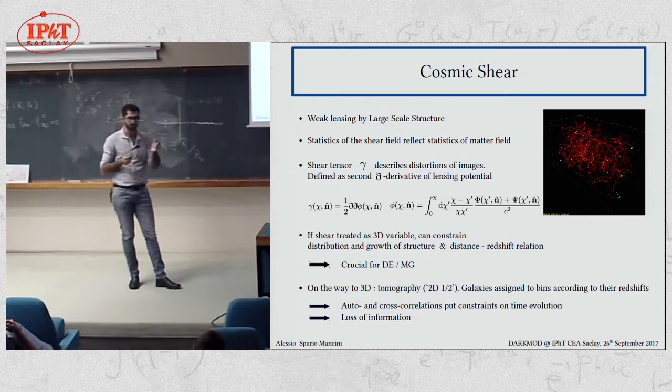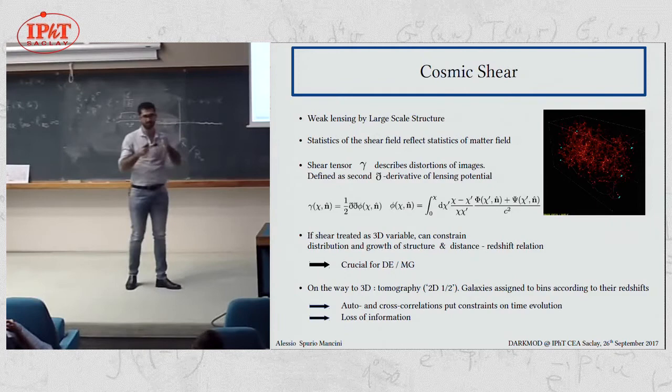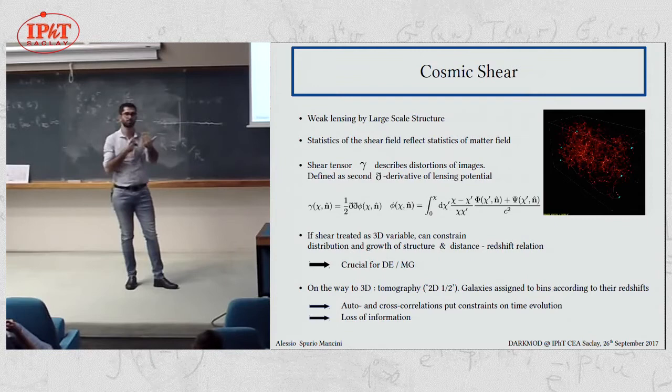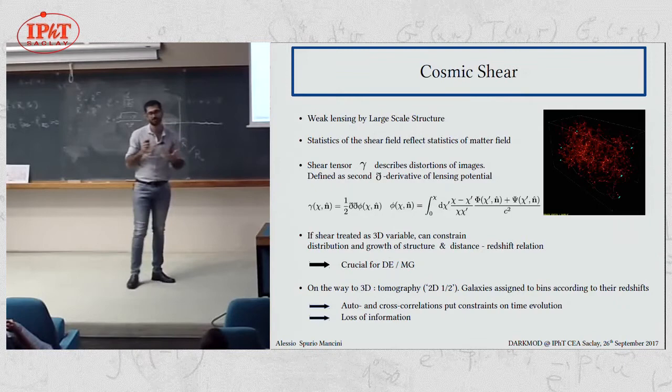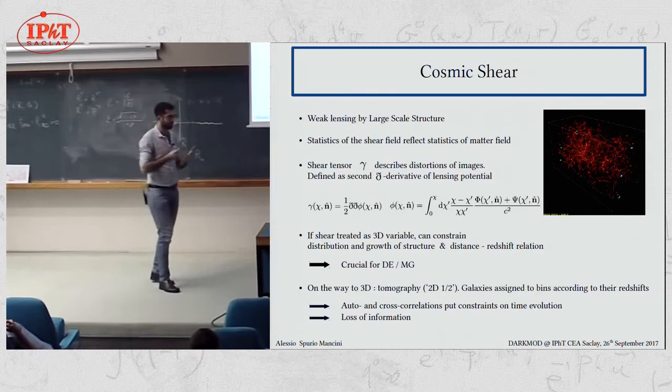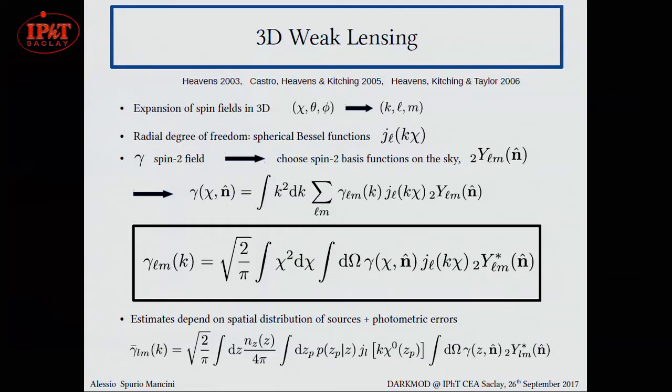That's why in the early days of weak lensing, people came up with this idea of tomography, which consists in binning your sources in redshift bins, then calculating signal in these bins, and then calculating auto and cross correlations between the bins. Because in this way, the projection that you make is still there, but it's smaller in range, because the bin range is smaller. But you see here that this is an approximation. In fact, sometimes this approach is called 2D and a half in German, because it loses still some kind of redshift information.